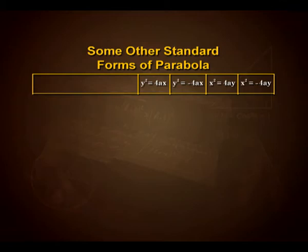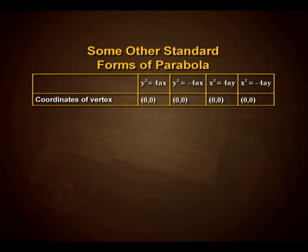Let us discuss about some other forms of parabola and list out a table. The coordinates of the vertex for y² = 4ax, y² = −4ax, x² = 4ay, and x² = −4ay are all (0, 0).